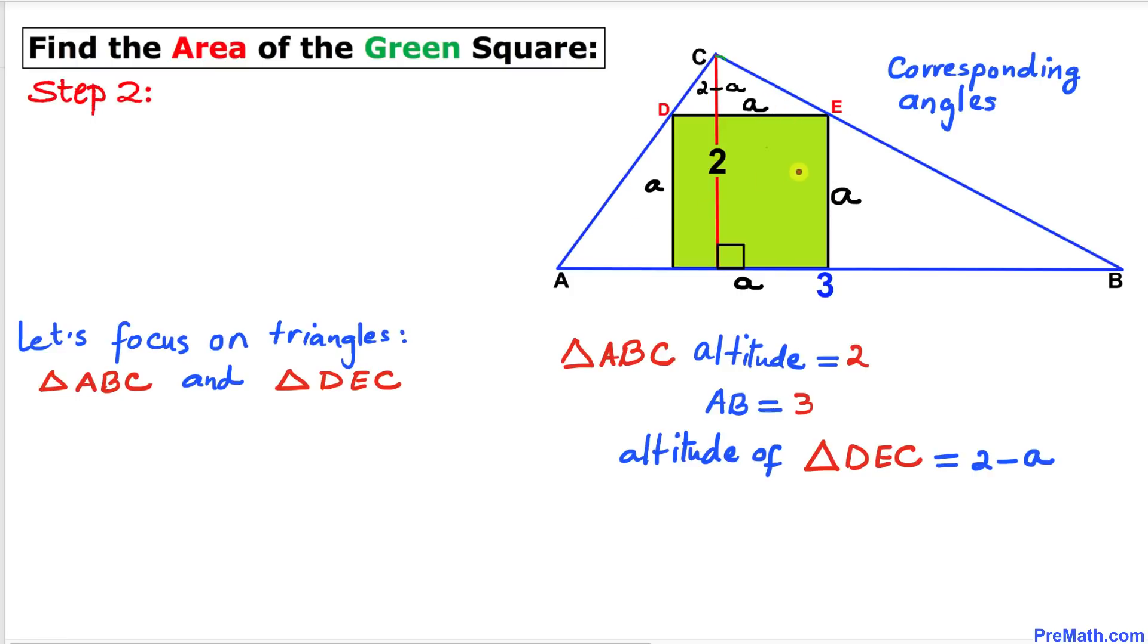We can see that this angle is the same as this angle because they are corresponding angles. Likewise, this angle is the same as this angle. They are corresponding angles and both of these triangles share this angle C.